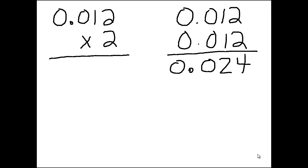So we're going to multiply: 2 times 2 is 4, 2 times 1 is 2, and then we have our zeros. Again, we know that our product is going to be 0.024 from our addition.